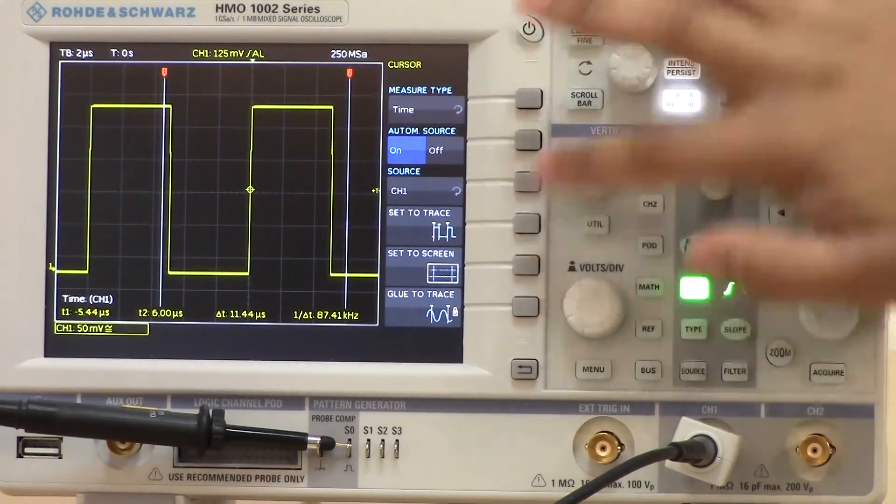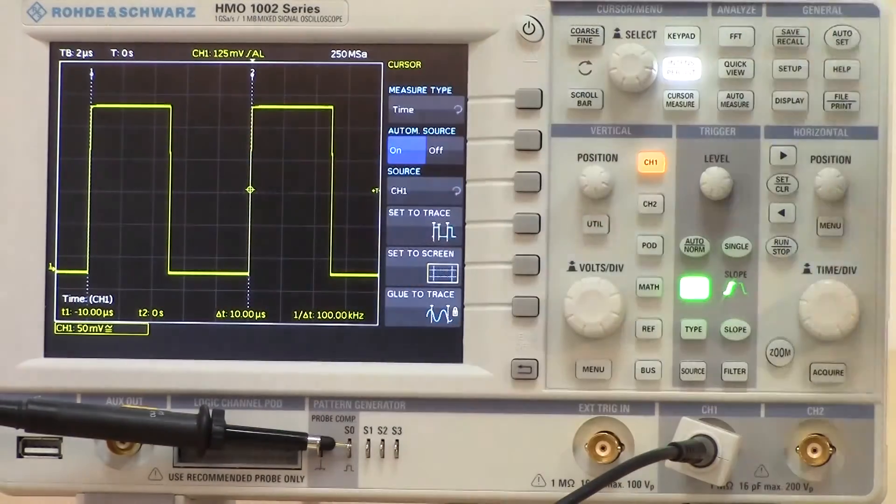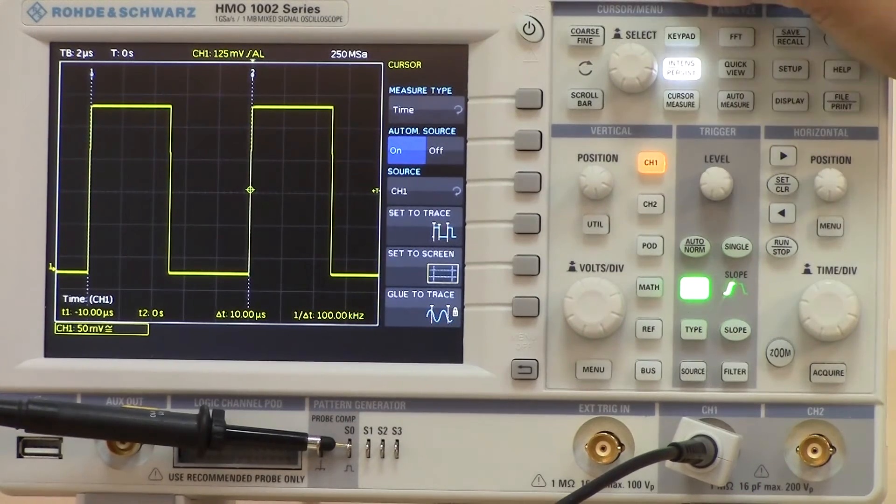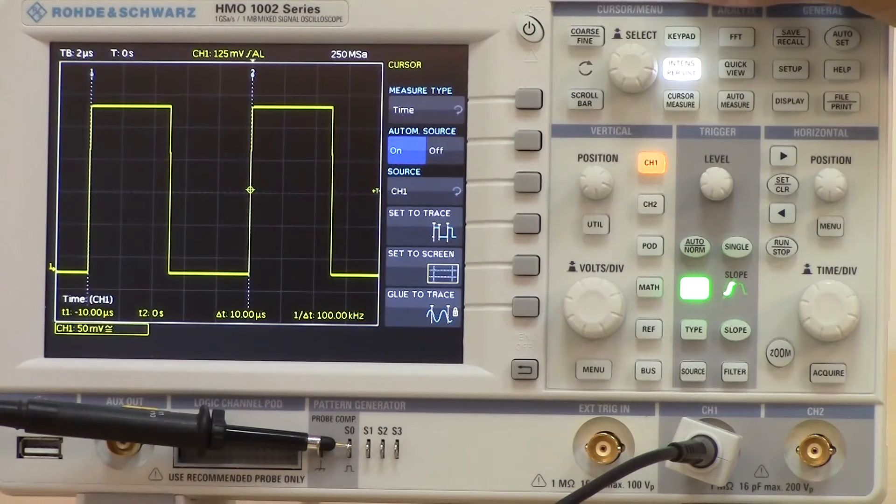If I select set to trace, that jumps to the first edge of the pulse, and then really quickly I can set up those cursors. And if I do want to make any changes, I can press that wheel again to tweak that.